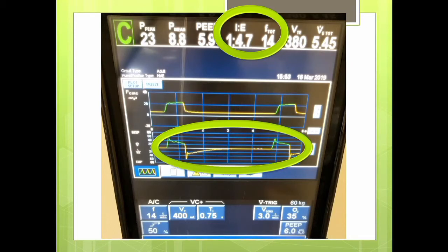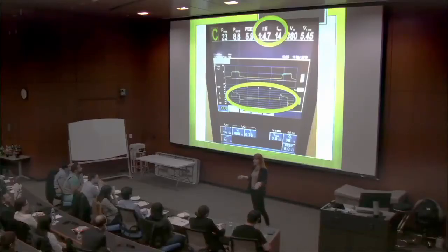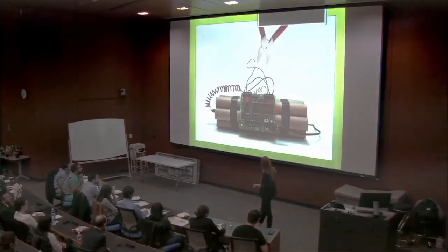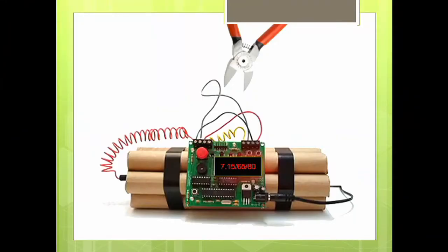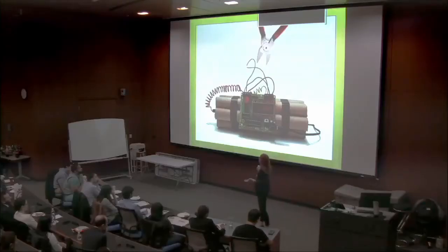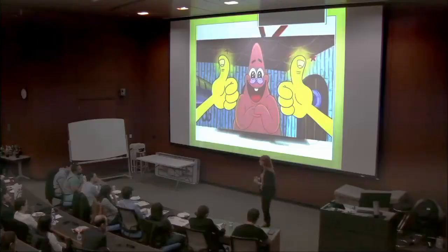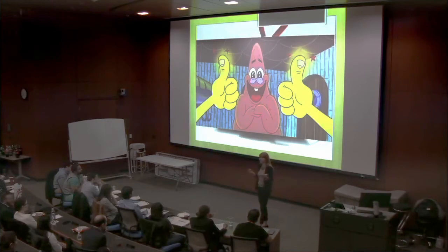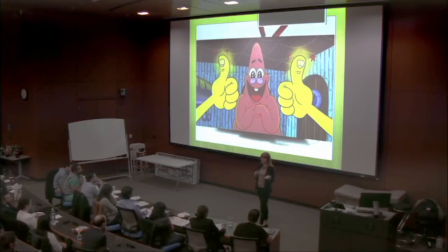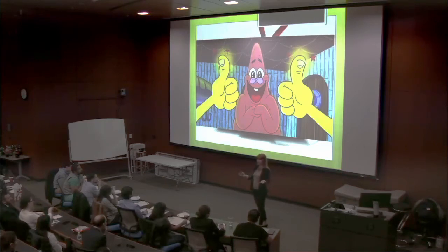By getting back to zero you've gotten rid of the auto-PEEP and thereby reduced the CO2. The blood gas comes back at 7.15 with a CO2 of 60 — consider that a success. This patient is sick with obstructive disease; it's never going to be 7.4. Remember: the enemy of good is better. As long as you're going in the right direction, that's a success.